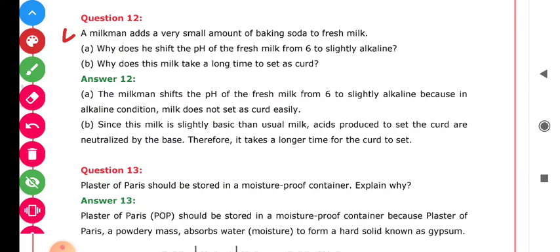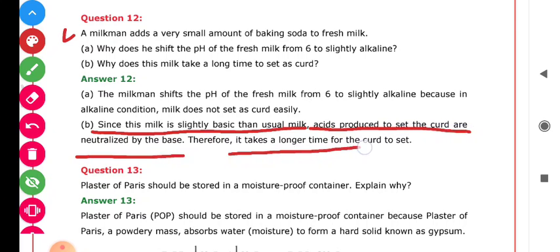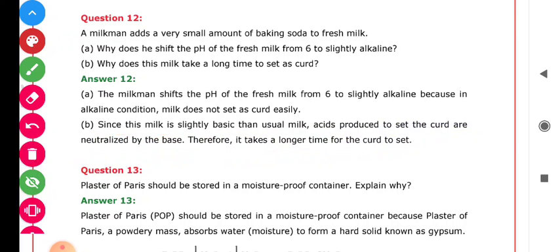Why does this milk take a long time to set as curd? Simple - as we are adding the baking soda, the pH value is going to increase. And if we want to decrease the pH value from the increased value, then it takes some more time. Since this milk is slightly basic than usual milk, acid produced to set the curd is neutralized by the base. Therefore it takes a longer time for the curd to set, as base and acid undergo neutralization reaction.